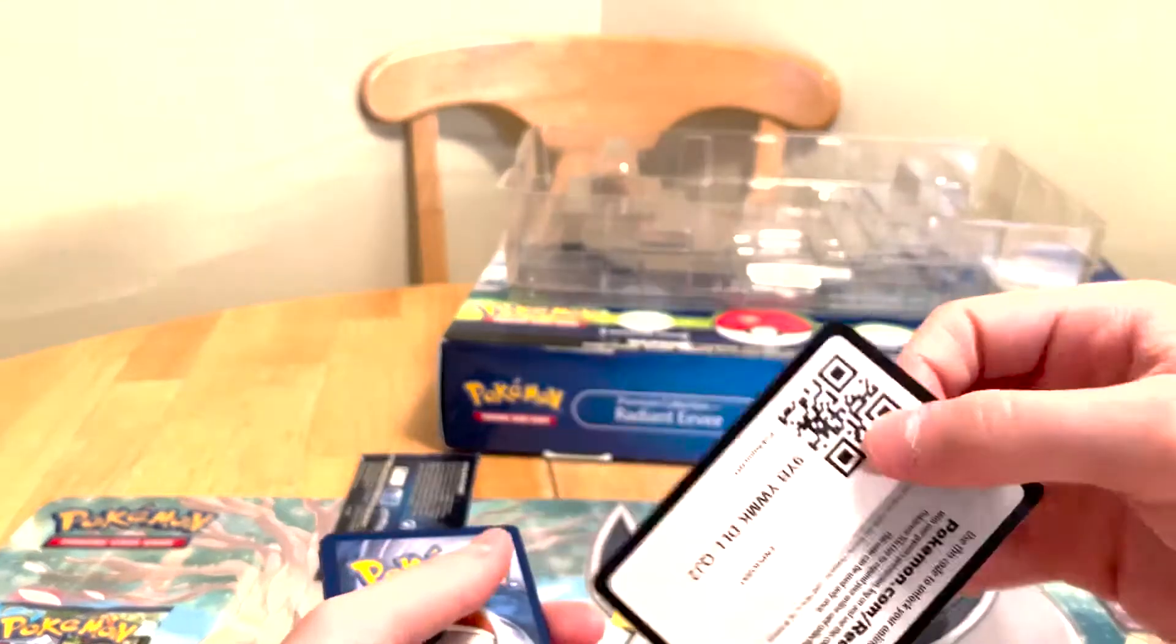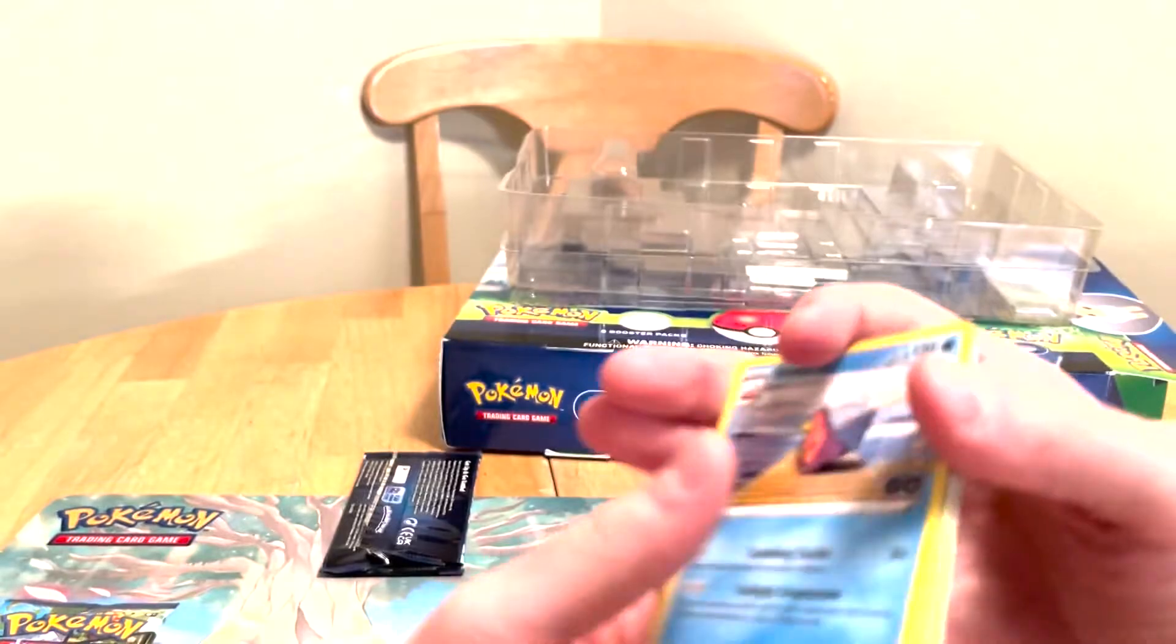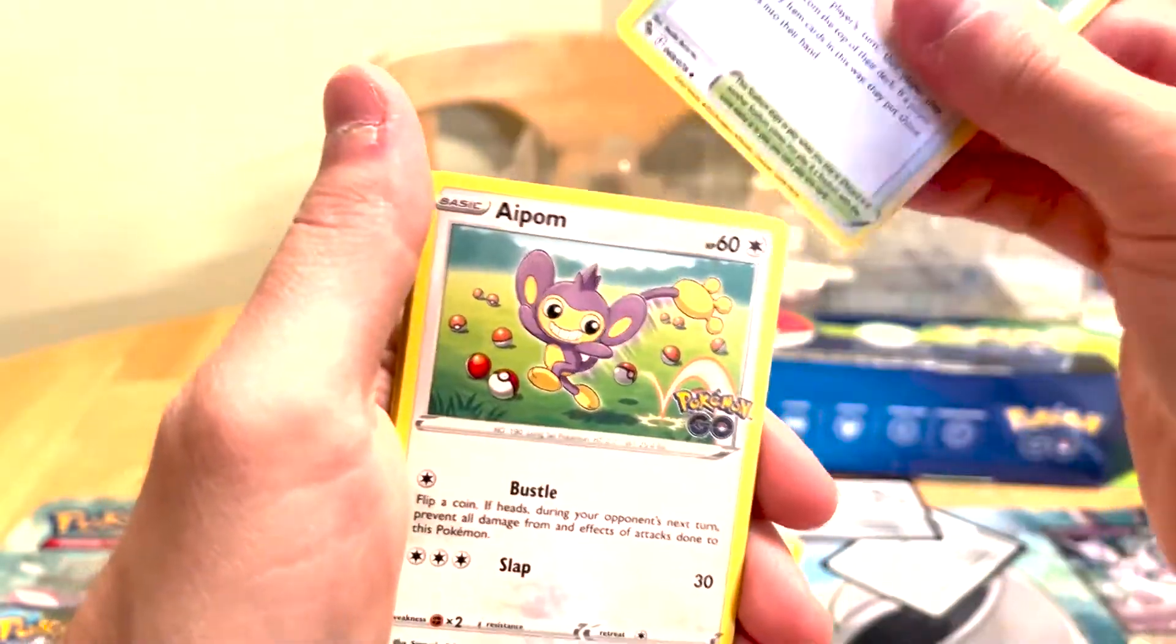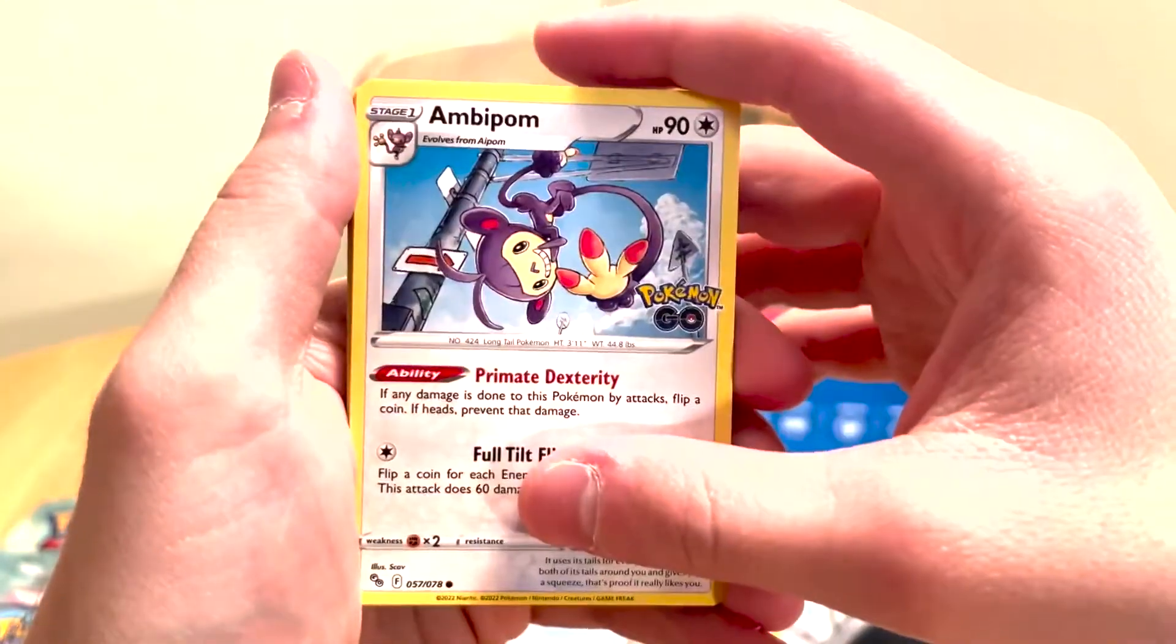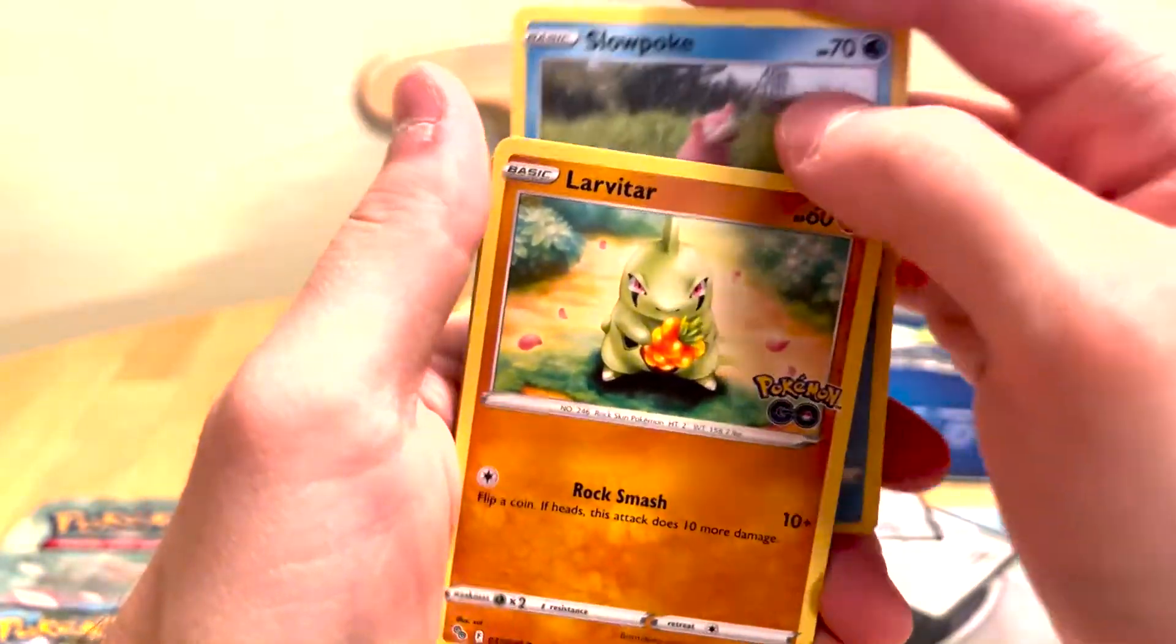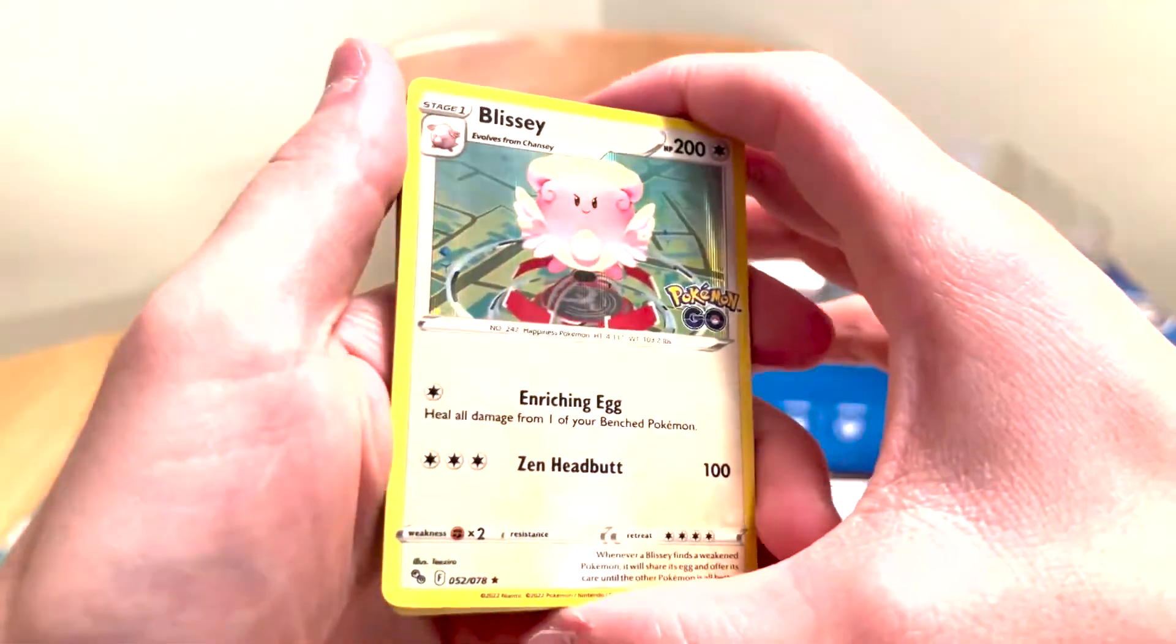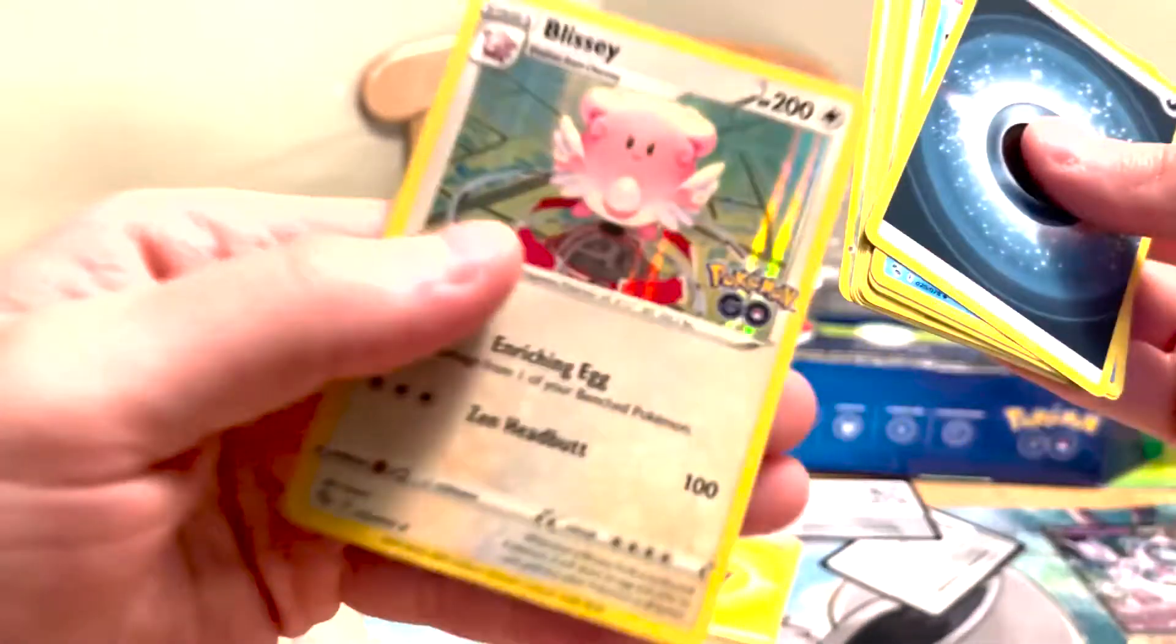Code card. Slowbro. Lunatone. Pokestop. That's cool. A-Pom. Natu. Ambipom. Slowpoke. So, we got both evolutions right there. Larvitar. Bidoof Hollow. Nice. Blissey. That looks cool. I like that Blissey. That's nice.